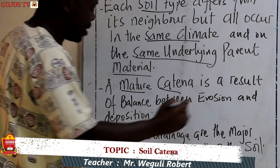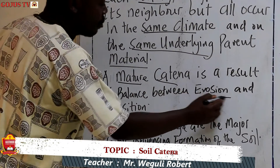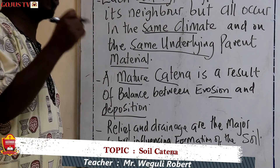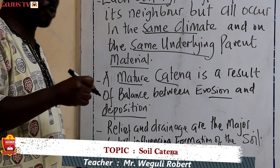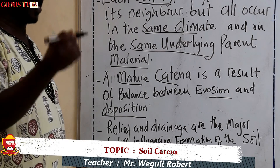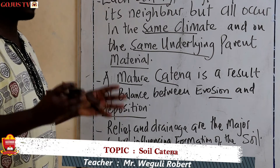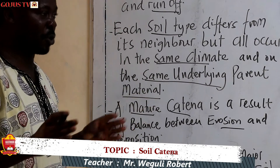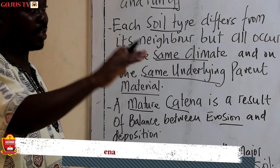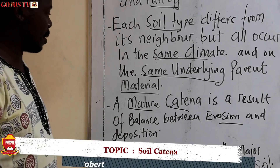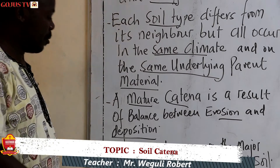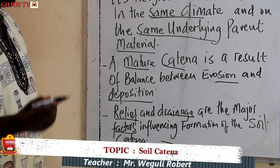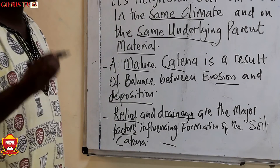A mature catena is the result of a balance between erosion and deposition. When there is more erosion and less deposition, we get an immature catena. But when erosion and deposition are balanced because of the differing slope levels, then we shall get a mature catena. Relief and drainage are the major factors influencing the formation of the soil catena.